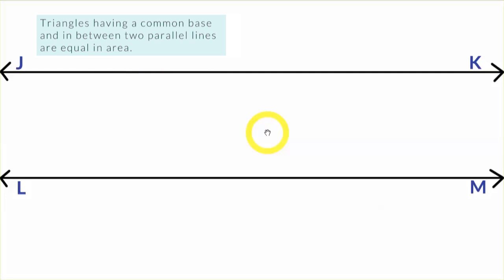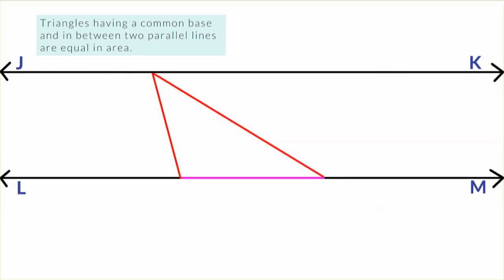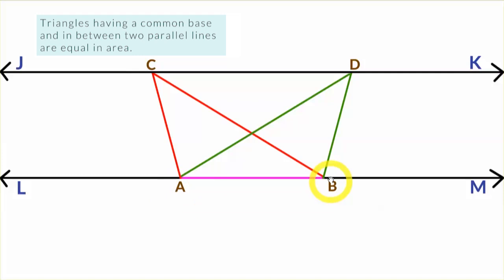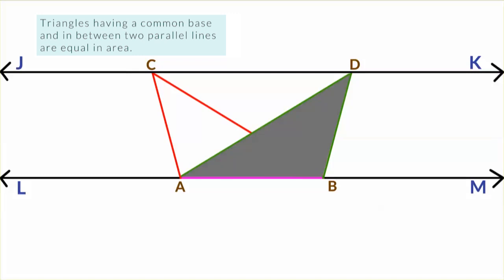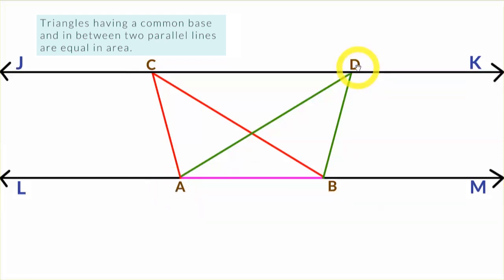So here we have to draw two triangles which are sandwiched, or stuck, in between JK and LM. Let me draw the first triangle and name it triangle ABC. There's a reason why I have coloured AB differently — that's because we have to draw another triangle from the side AB, and that triangle is triangle ABD. So here we have two triangles: triangle ABC and triangle ABD, and they have a common side AB.